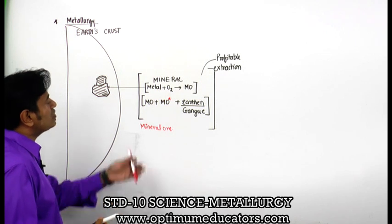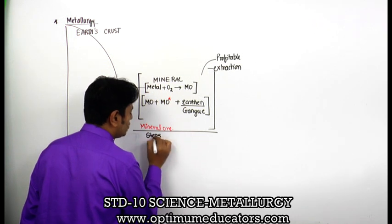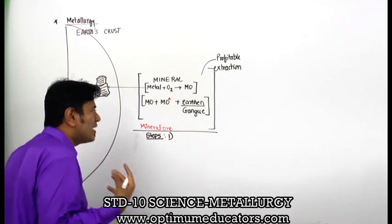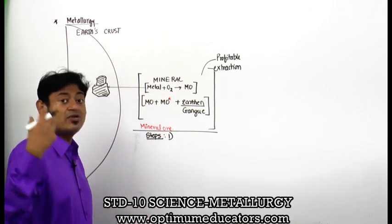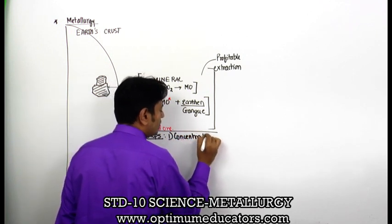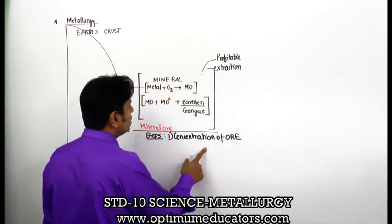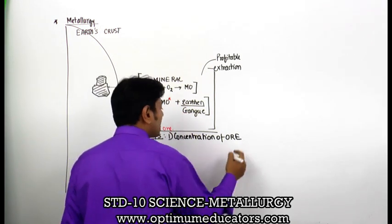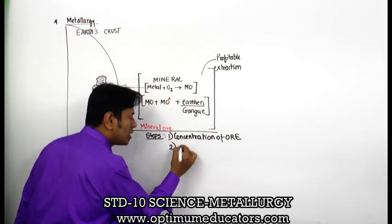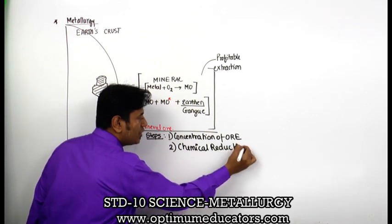If I want profitable extraction from here, I have to follow certain steps. First, I will do washing - using high pressure water, hydraulic systems, gravitational systems, magnetic separations. I will basically do concentration of ore, where earthen gang materials will be removed. After that, I will do chemical reduction.